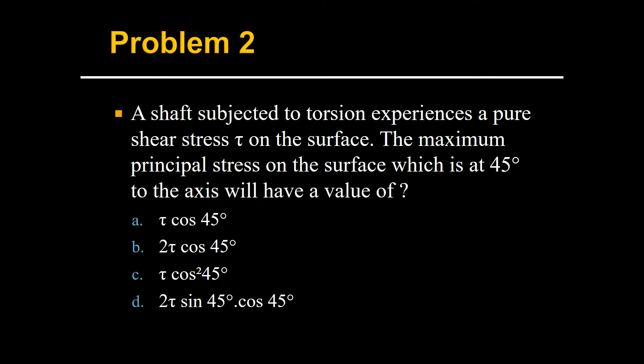Welcome to the question series of strength of materials. This is question number two. A shaft subjected to torsion experiences a pure shear stress tau on the surface. The maximum principal stress on the surface which is at 45 degrees to the axis will have a value of? So we're asking what is the maximum principal stress on the surface which is at 45 degrees to the axis.